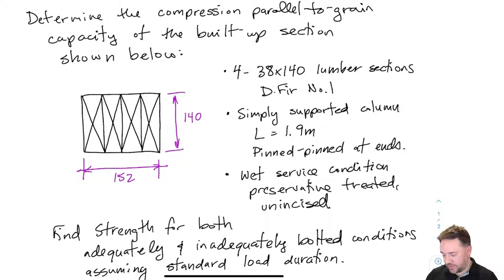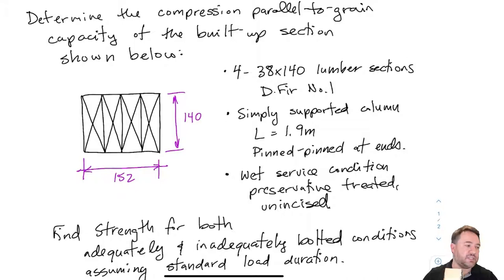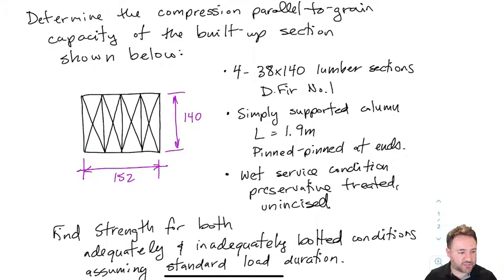We're talking about columns that are not made of a single member but are made of multiple members all stuck together. In this case we're looking at four different members stuck together, connected using either bolts, nails, or split ring connectors. We looked at in a previous video how to calculate the resistance of these for bolted and nailed connections. In this particular problem we have four 38 by 140 lumber sections that we are putting together to make a single big built-up column section, and we're trying to calculate what is the axial strength of this column in compression — which is the parallel to grain strength.